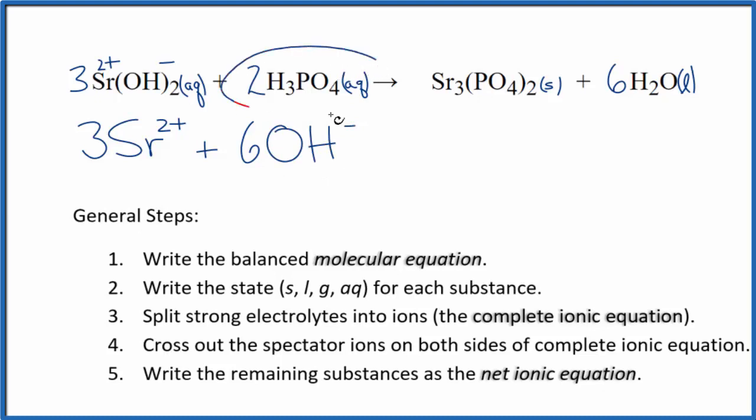We won't split this apart because we said it's a weak acid. So it's a weak electrolyte. We don't split apart weak electrolytes. This is a good one to remember. So we have two of these H3PO4. And these are the reactants in our net ionic equation.